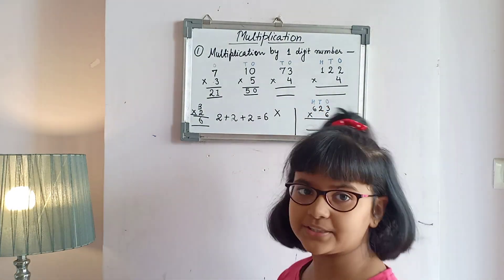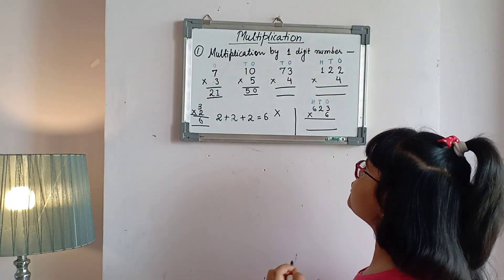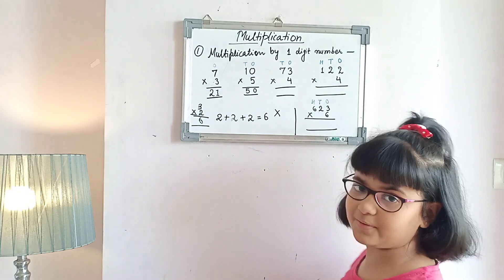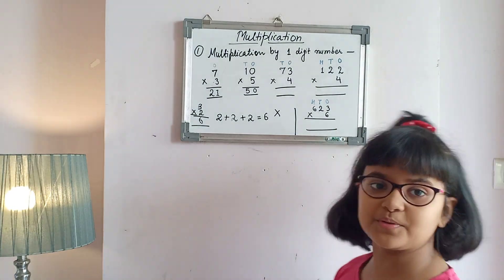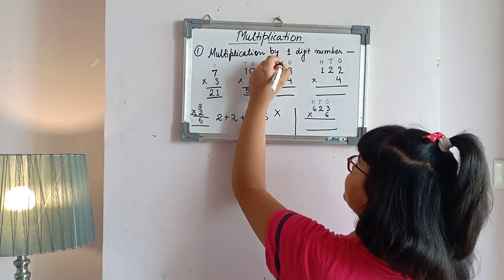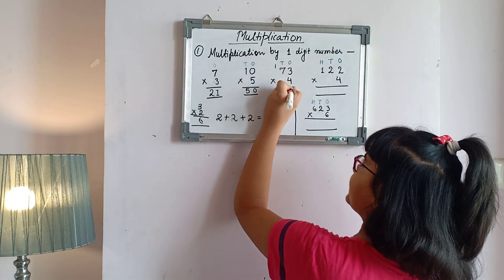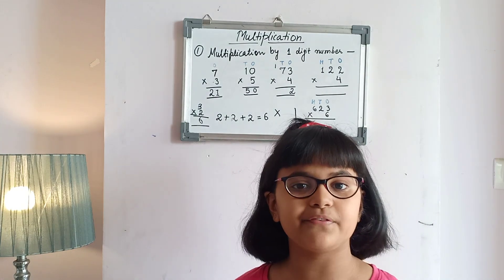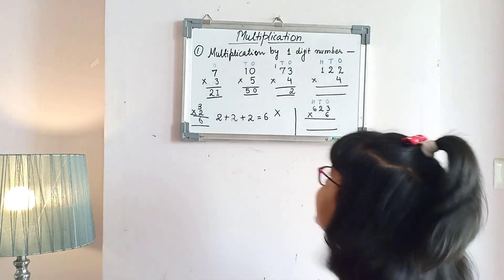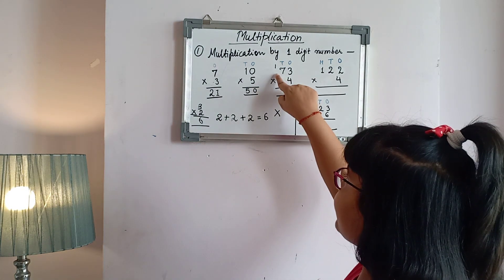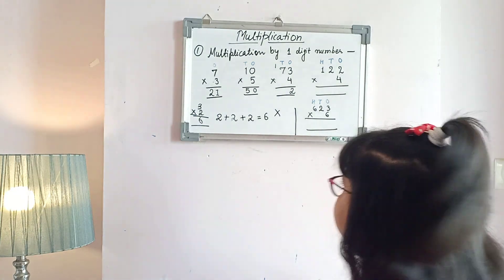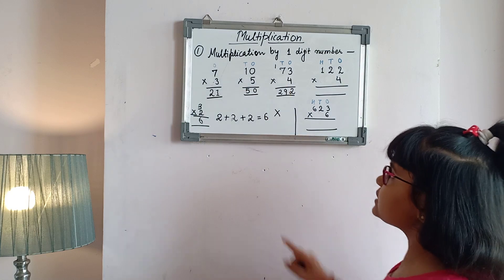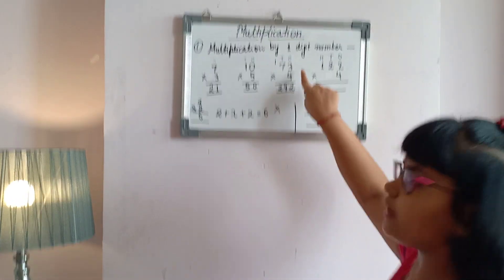Now let's go to the third question. This is a carry question: 4×1 is 4, 4×2 is 8, 4×3 is 12 — so we carry 1 and write 2. Then 4×7 is 28, and 28 plus 1 equals 29. So we write 29 here. Therefore 292 is the product of this question.